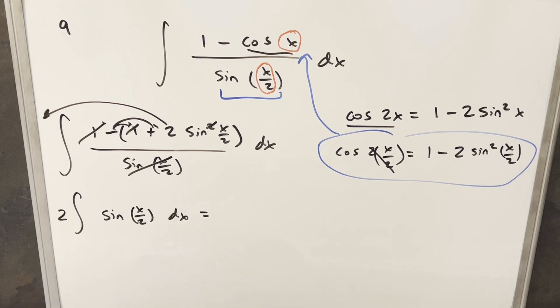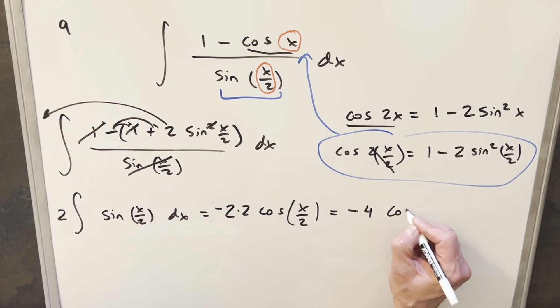Now we'll just go ahead and integrate this thing, so we'll have two out front. Integral of sine x over two is going to be minus, which I'll put out front here, cosine x over two. Then with the chain rule we'll have one half, take the reciprocal and we'll bring a two out front here. So for the final solution we're just going to have minus four cosine x over two plus c, and that's it.